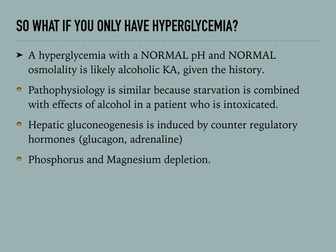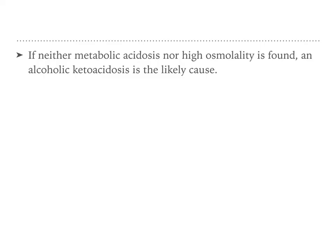What if you only have hyperglycemia without metabolic acidosis and without elevated plasma osmolality? Given the history, the diagnosis is likely alcoholic ketoacidosis. The pathophysiology is similar to DKA: starvation is combined with the effects of alcohol in an intoxicated patient, causing lack of regulation of glucagon and increased hepatic gluconeogenesis, which produces keto acids. There is also substantial phosphorus and magnesium depletion in alcoholic ketoacidosis.